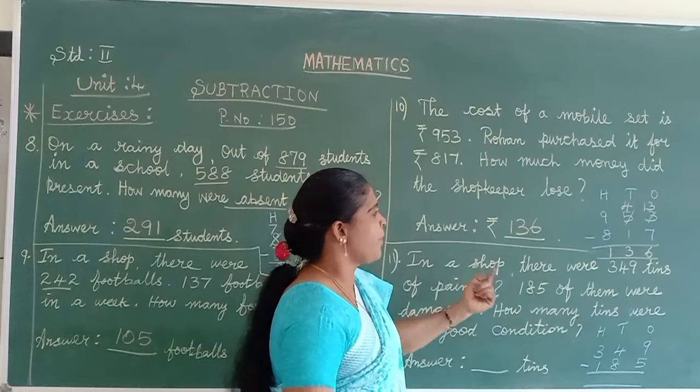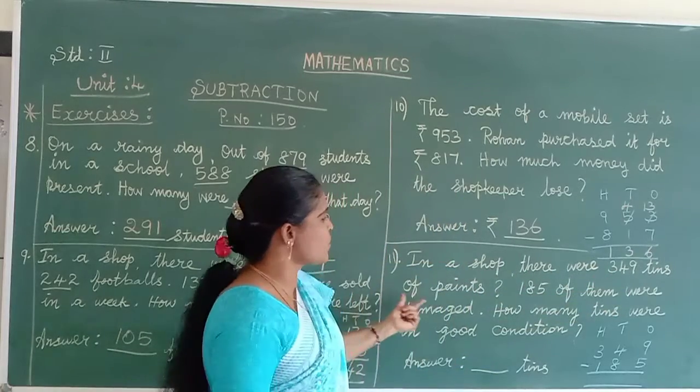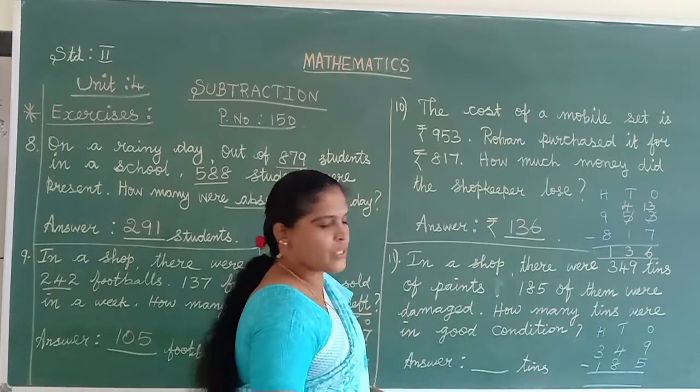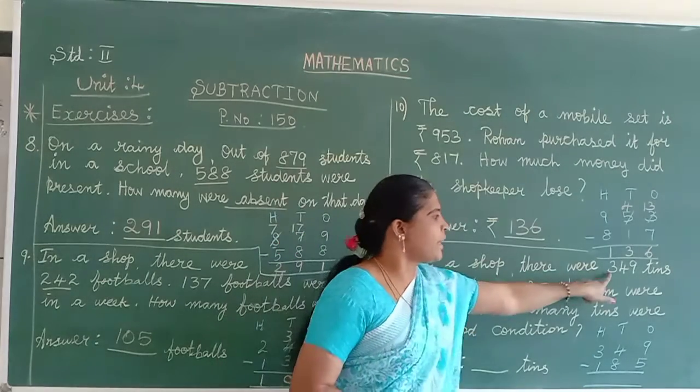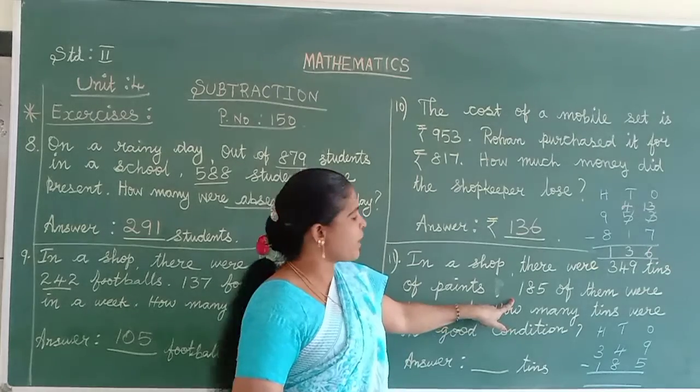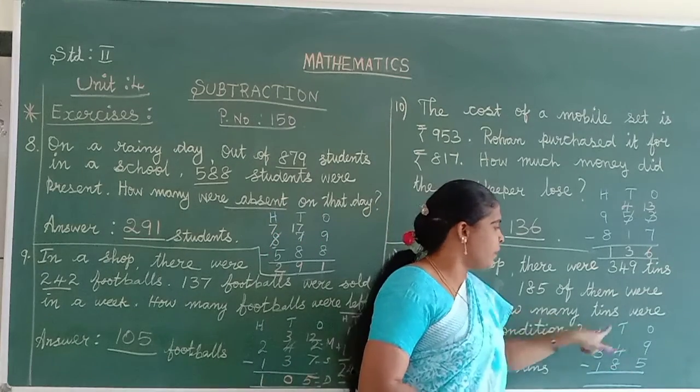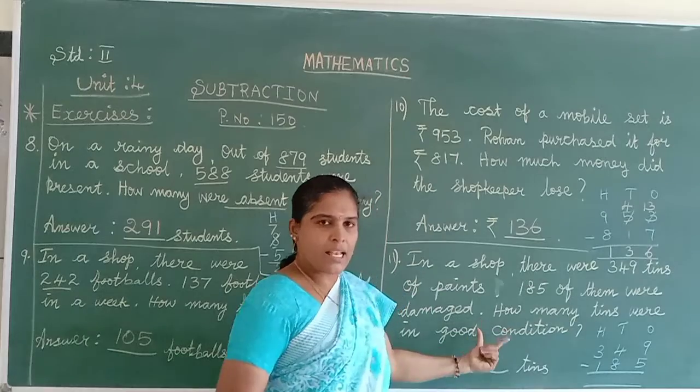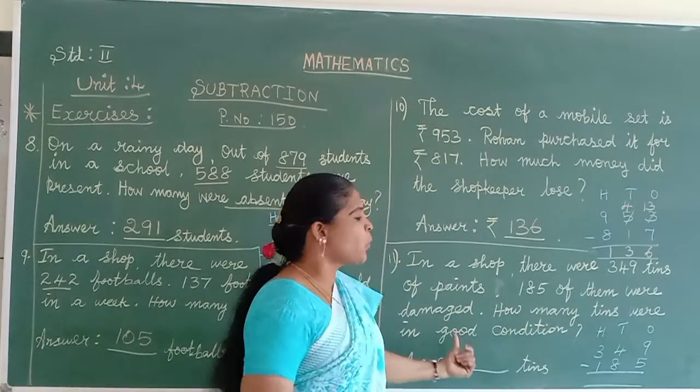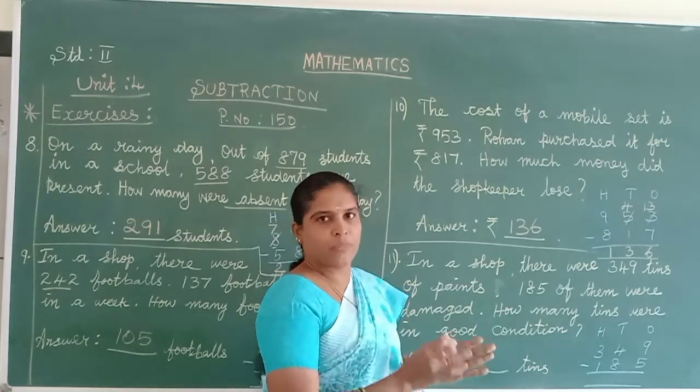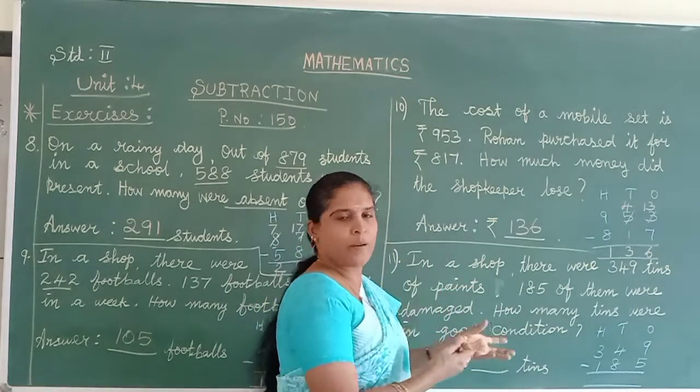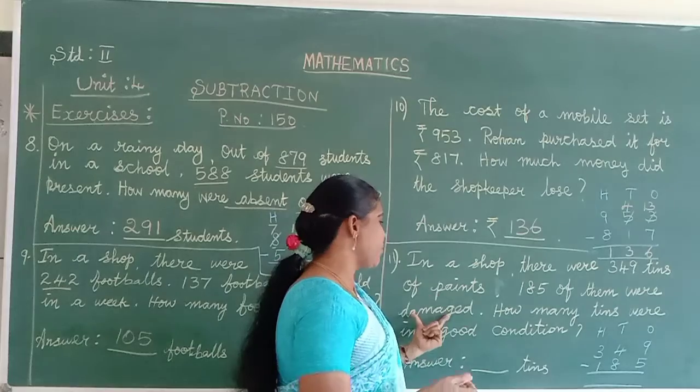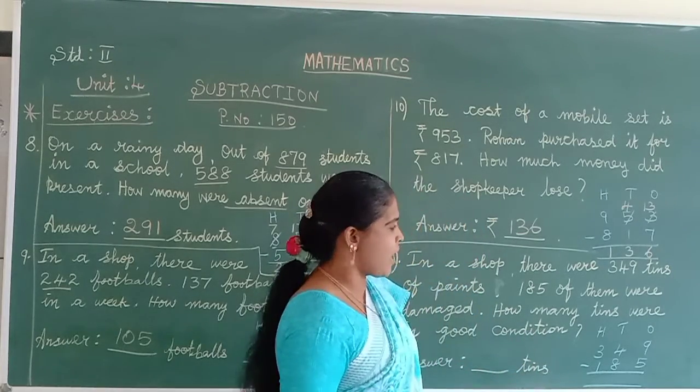11th word problem. In a shop there were 349 tins of paints. 185 of them were damaged. So in total means 349, and how many of them damaged? 185. You can make a column: ones column, tens column, hundreds column. Total number and damaged ones. Then what is left? How many things were in good condition? One part they will give in the total itself, half of the part in another one. Then they will ask about the good condition things. Half it damaged, and the other good condition things they will ask.